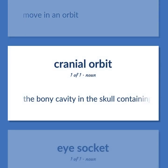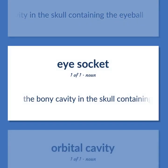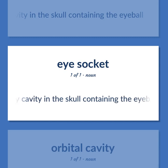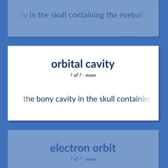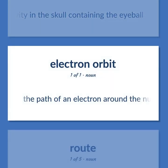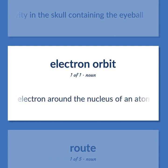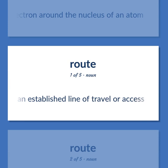Orbit (revisited): The bony cavity in the skull containing the eyeball. The path of an electron around the nucleus of an atom. An established line of travel or access.